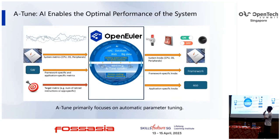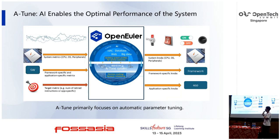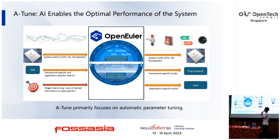We want to use AI to enable optimal performance of the system. First, we need to collect all kinds of data, such as system metrics — for example, CPU utilization — and other data such as framework-specific and application-specific metrics, as well as target metrics.